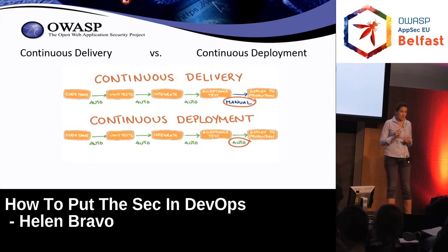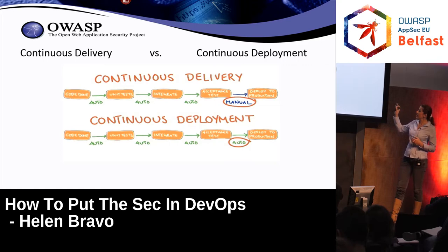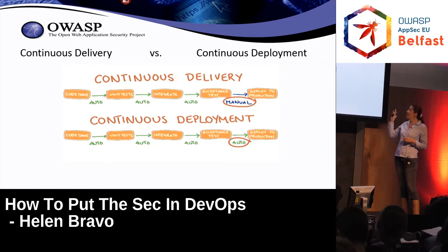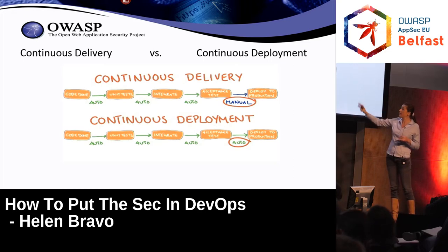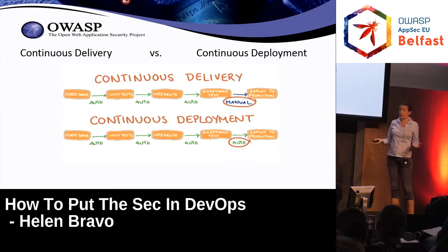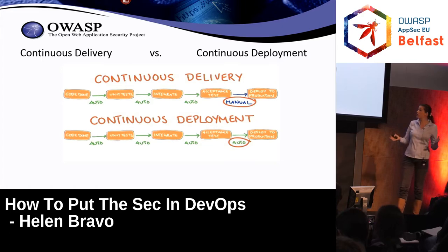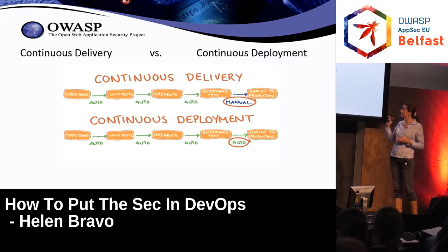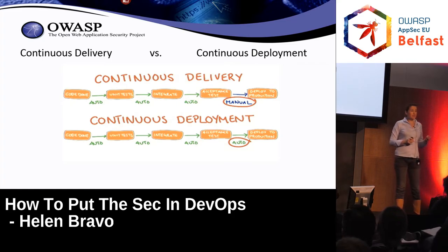There is a huge difference between continuous delivery and continuous deployment. Both go from committing the code, running unit tests, building the package, and running acceptance tests with a large suite of automated tests. But the difference is how we switch to production: for continuous delivery it's done manually, and for continuous deployment it's done automatically.